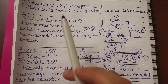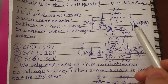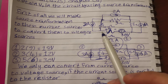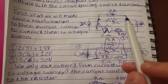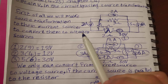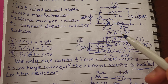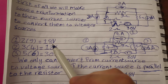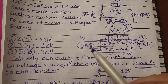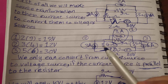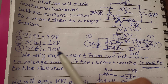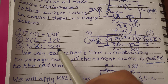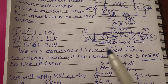In this question we will obtain V_node in the circuit by using source transformation. First, we will make source transformation for these current sources to convert them to voltage sources: 2 amperes × 9 ohms = 18 volts, 3 amperes × 4 ohms = 12 volts, and 6 amperes × 5 ohms = 30 volts.